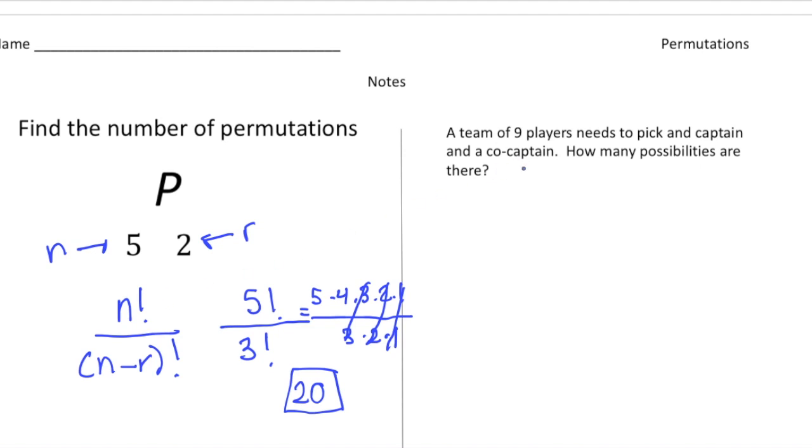One more problem here. It says a team of nine players needs to pick a captain and a co-captain. How many possibilities are there? So let's set up our expression. It's going to be P, well the n value is going to be 9, and then the r value is going to be the 2.